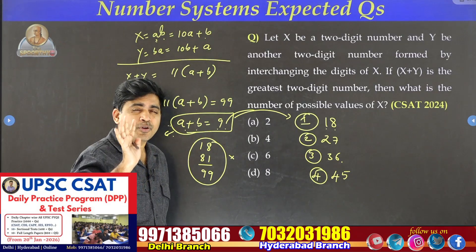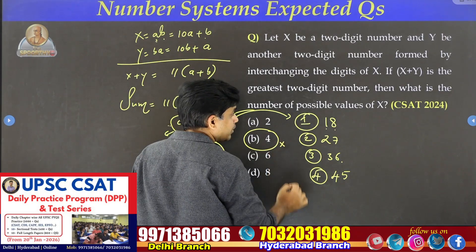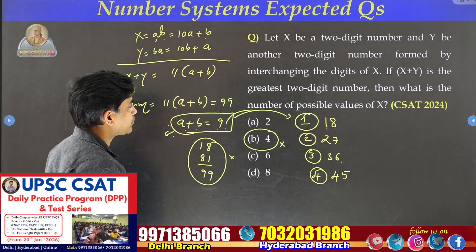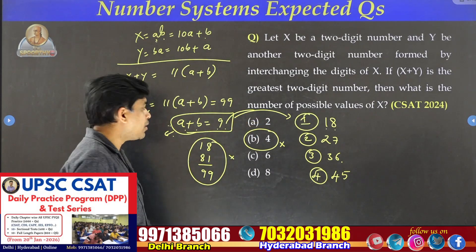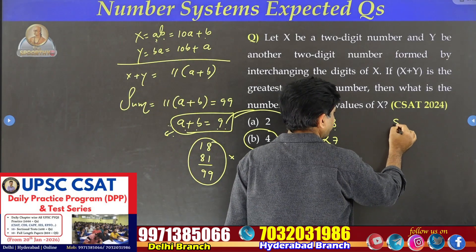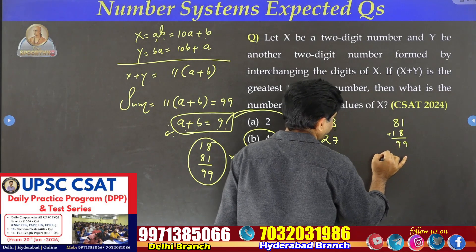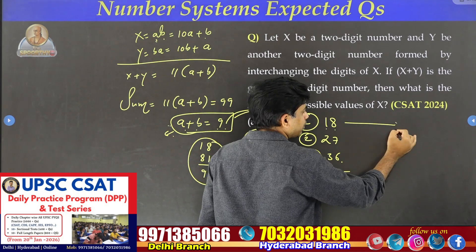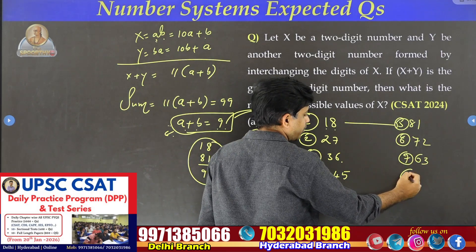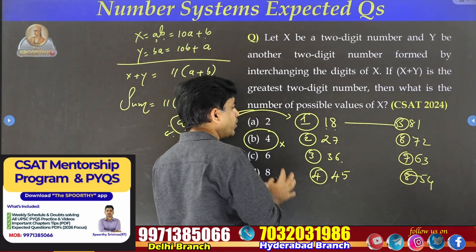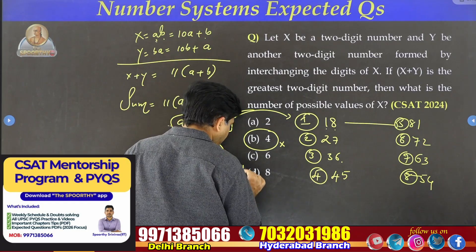For this question, a few answered option B — only 4 numbers — which is the wrong answer. Why? Because others can also take 81 as x. If they take 81, the reverse number is 18, and the sum also equals 99. So 81 is the fifth case, 72 the sixth, 63 the seventh, 54 the eighth. Total: 4 plus 4 equals 8 numbers. The answer is option D.